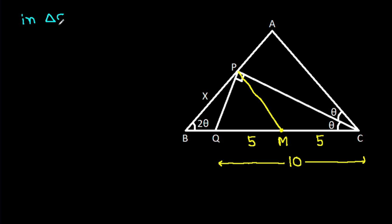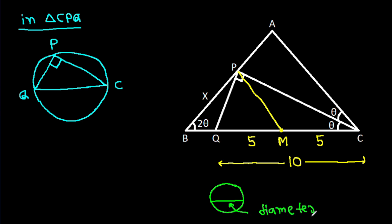In triangle CPQ, this angle is 90 degrees and if we make a circle around CPQ, then in any circle, diameter makes an angle of 90 degrees on the circle, and we have angle CPQ is 90 degrees.